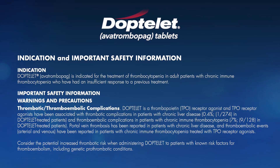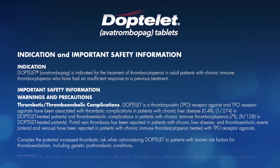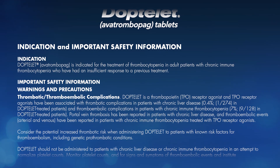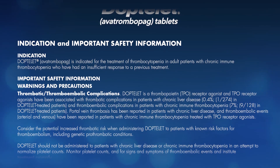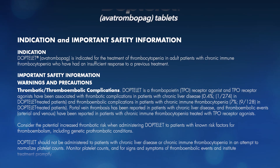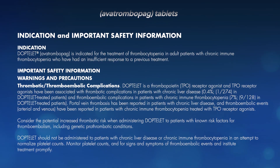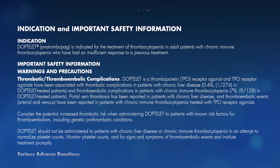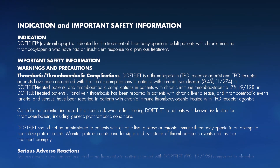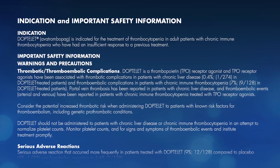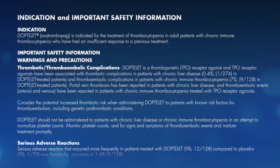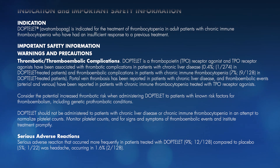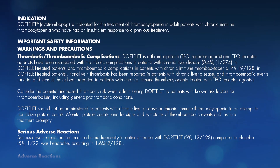Important safety information — warnings and precautions: thrombotic thromboembolic complications. DopTelit is a thrombopoietin TPO receptor agonist, and TPO receptor agonists have been associated with thrombotic complications in patients with chronic liver disease: 0.4%, or 1 out of 274, in DopTelit-treated patients. Portal vein thrombosis has been reported in patients with chronic liver disease, and thromboembolic events — arterial and venous — have been reported in patients with chronic immune thrombocytopenia treated with TPO receptor agonists.